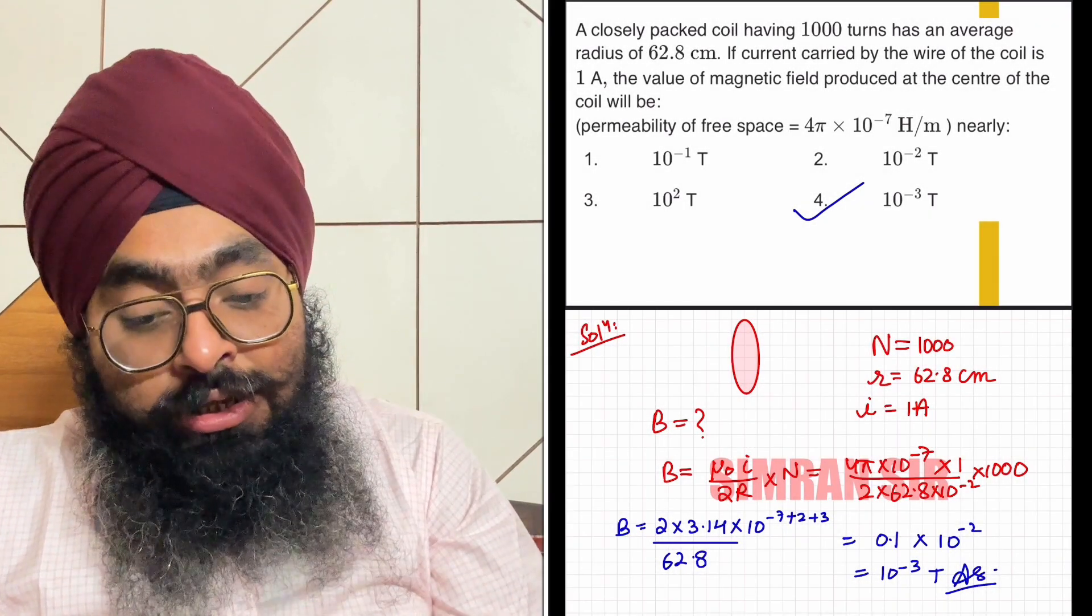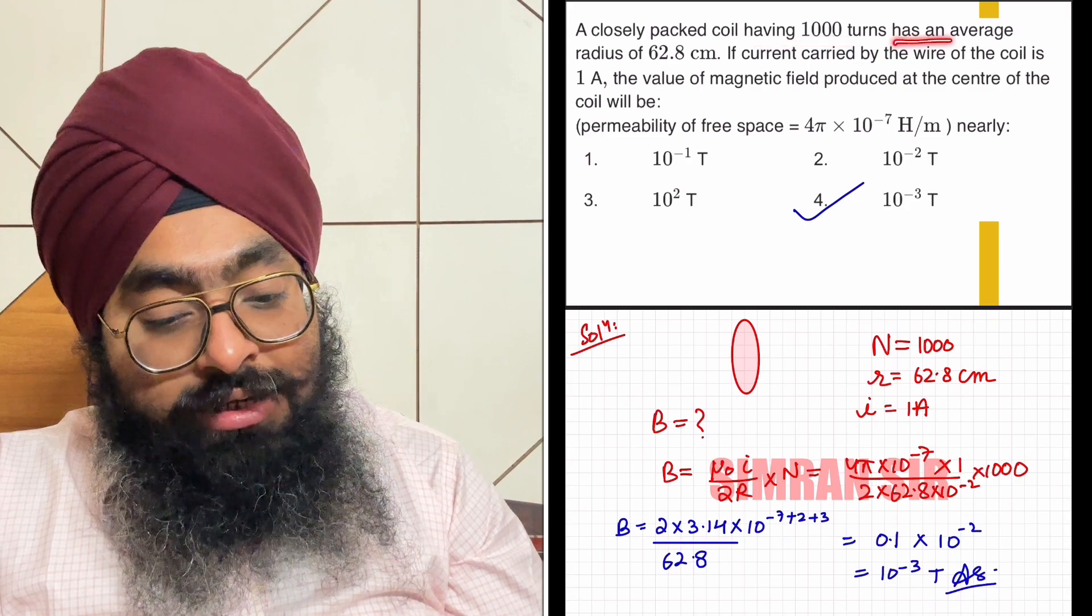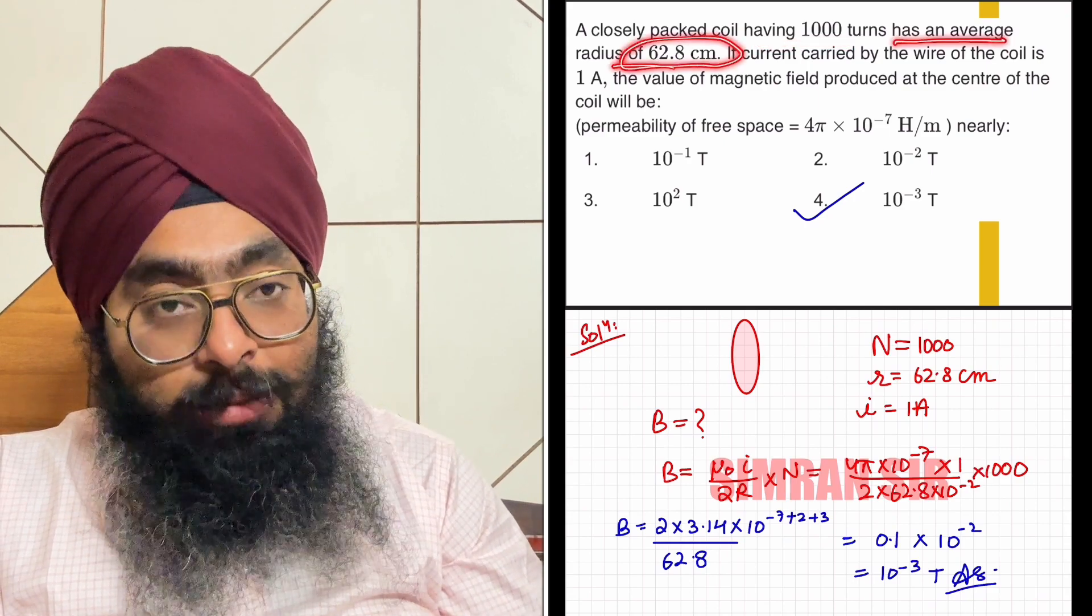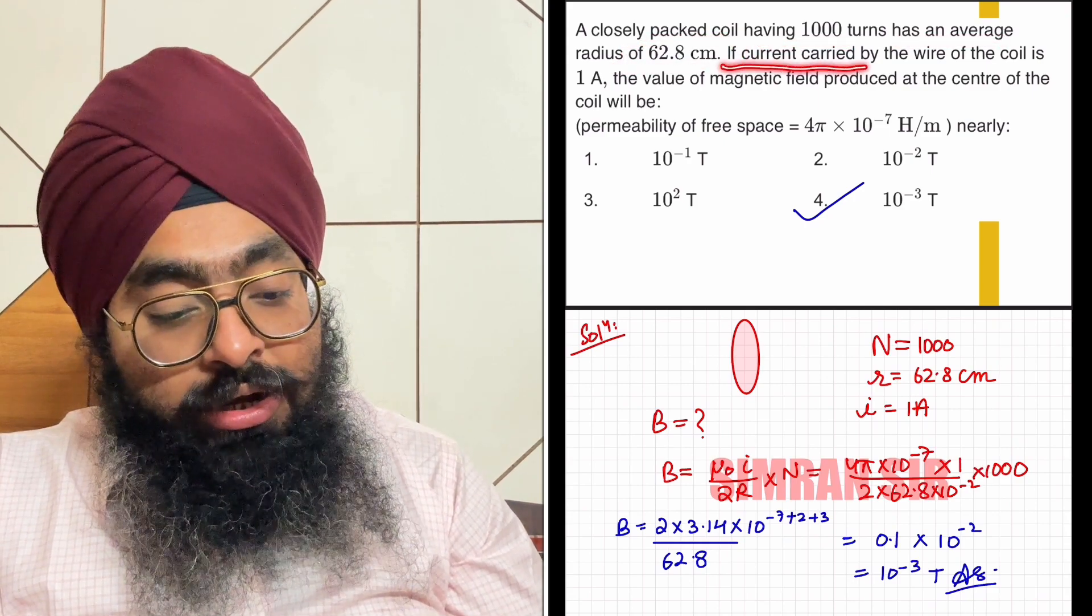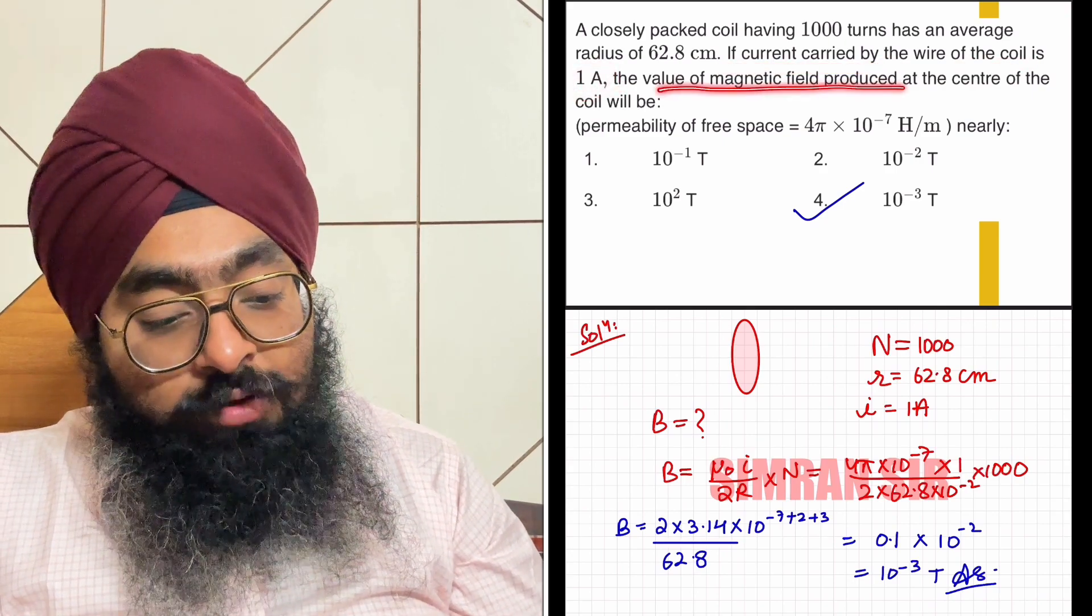Students, let us solve this question. A closely packed coil having 1000 turns has an average radius of 62.8 centimeters. If the current carried by the wire of the coil is 1 ampere, the value of the magnetic field produced at the center of the coil will be...